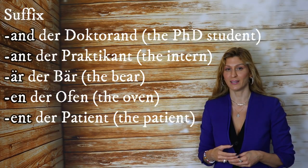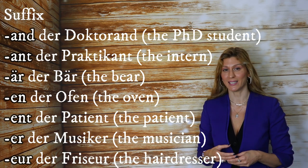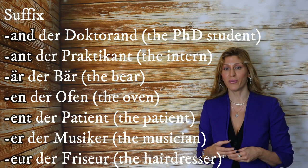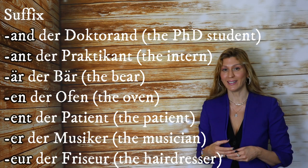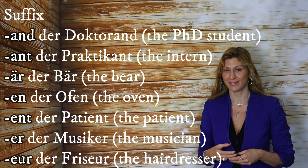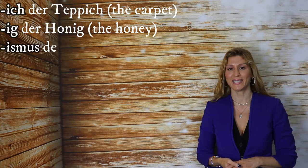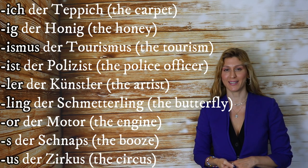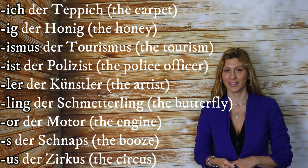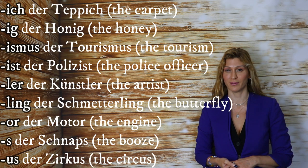Masculine word endings: -and (der Doktorand), -ant (der Praktikant), -är (der Bär), -en (der Ofen), -ent (der Patient), -er (der Musiker), -eur (der Friseur), -ich (der Teppich), -ig (der Honig), -ismus (der Tourismus), -ist (der Polizist), -ler (der Künstler), -ling (der Schmetterling), -or (der Motor), -schnaps (der Schnaps), -us (der Zirkus).